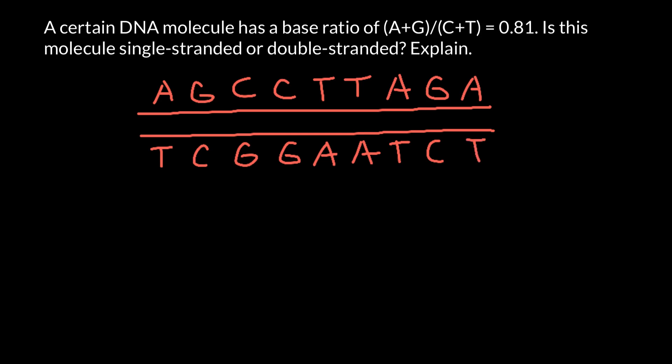Now, let's count how many adenines and guanines we have here. 1, 2, 3, 4, 5, 6, 7, 8, 9. So we have adenines plus guanines, which equal 9.